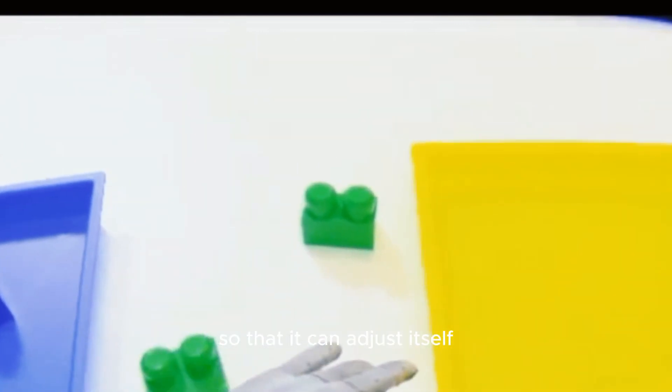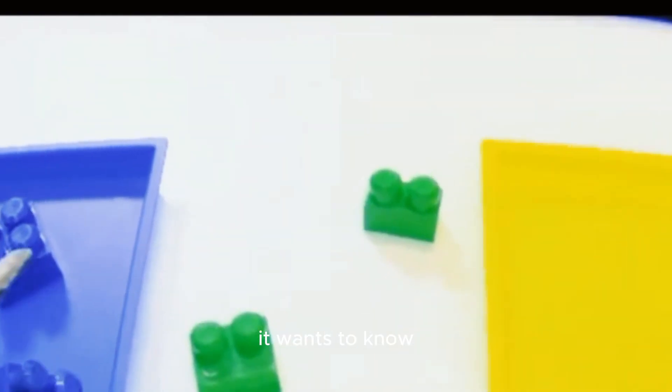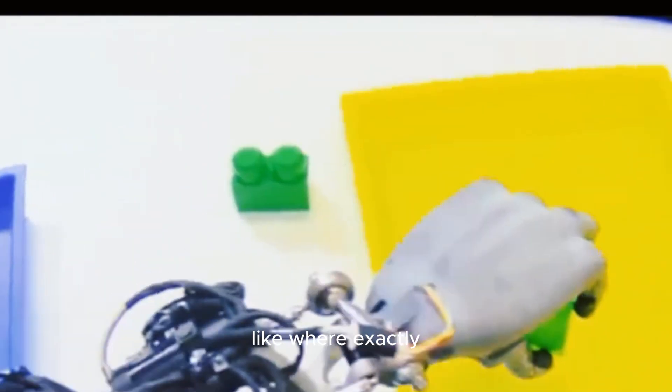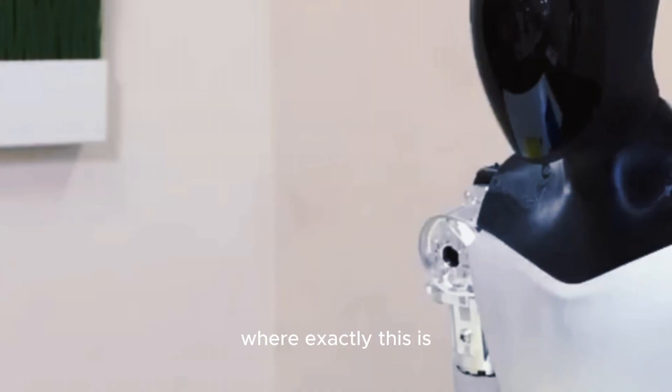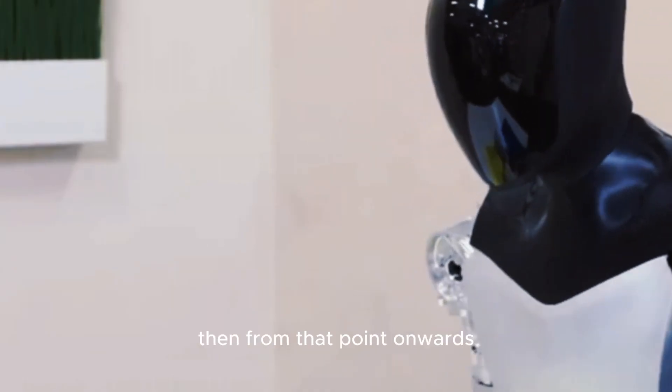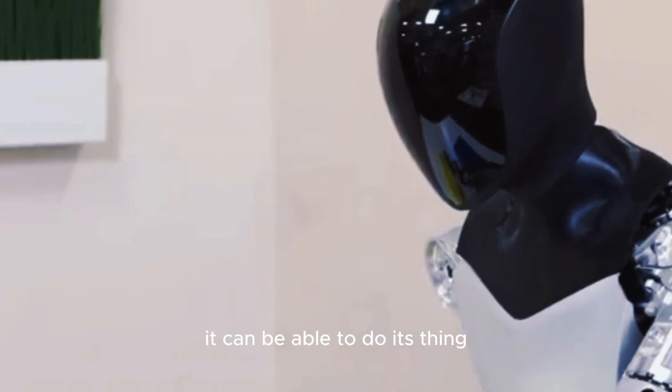This is pretty important for the robot to be able to self-calibrate itself so that it can adjust itself. It knows the position, it wants to know where exactly my joints are, my links are, where exactly this is, then from that point on, once it can be able to do its thing.